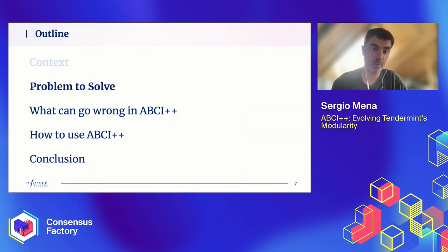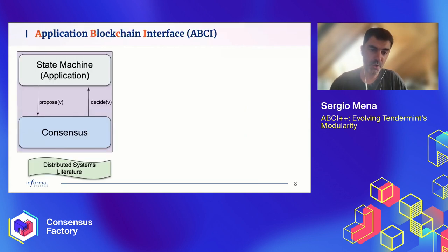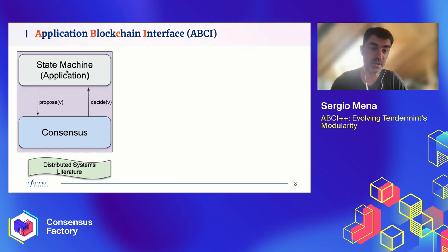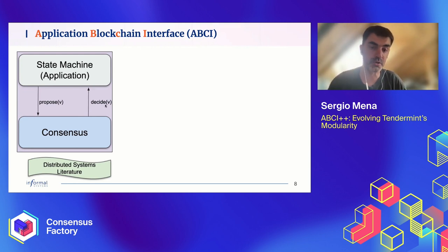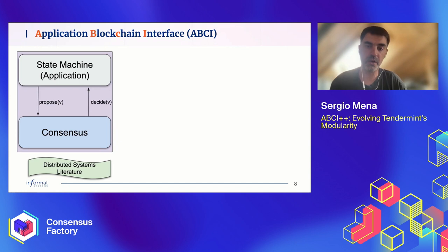Let's focus on the problem we are trying to solve — the justification for the work I'm presenting. In the distributed systems literature, we represent modules this way: we have a consensus module offering well-known properties, and the application — the replicated state machine — with propose(v) and decide(v) primitives. Whenever the state machine is ready to propose a new value — in blockchain, that's a block — it calls this primitive on consensus. Consensus does its magic via the network, follows its algorithm, and when ready to decide, calls this primitive on the application to signal the decision taken at all nodes.